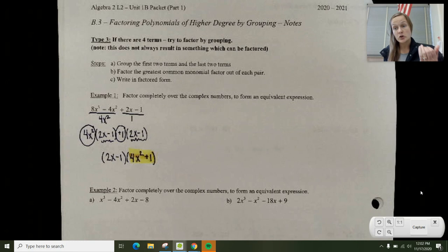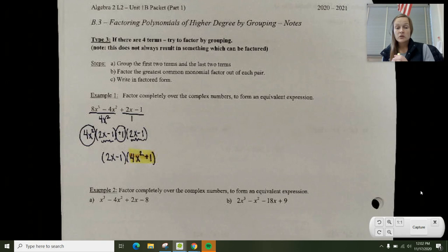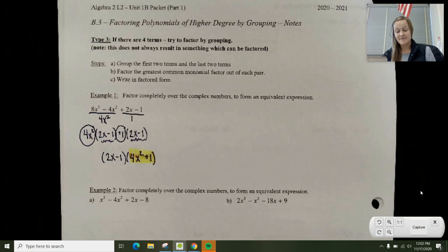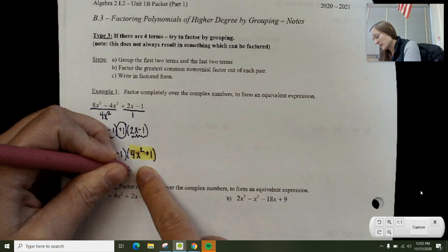4x² is a perfect square - it's (2x)². And 1 is a perfect square - it's 1². Since I have an addition sign, that means I have a sum of squares, which means my factors here will have i's in them.